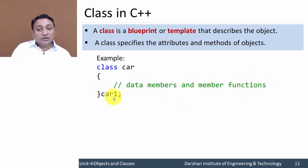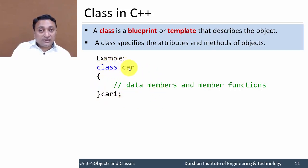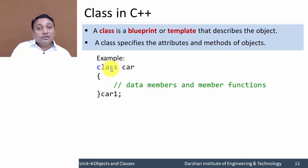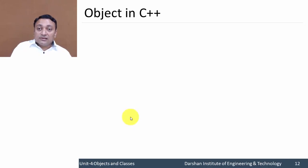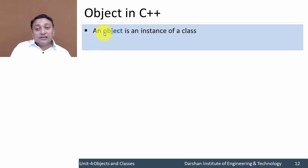This syntax seems very similar to structure — we write 'struct', then structure name, then structure members, and we create structure variables. So class is a user-defined data type, just as we use structure as a user-defined data type. In this example, 'car' is a class and 'car1' is an object of that class. An object is an instance of a class, or you can say an object is a variable of that class.